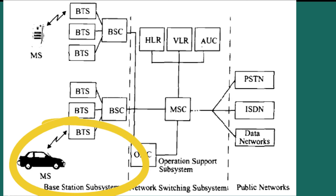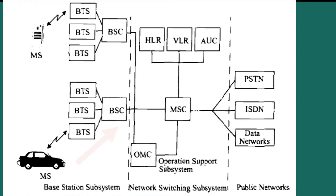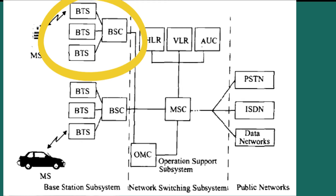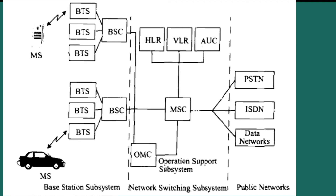The block diagram of the GSM system architecture shows the mobile station communicating with the base station subsystem (BSS) over the radio air interface. The BSS consists of many BSCs which connect to a single MSC, and each BSC typically controls up to several hundred BTSs. The NSS handles the switching of GSM calls between the external network and the BSCs, and is also responsible for managing and providing external access to several customer databases. The MSC is the central unit in the NSS and controls the traffic among all the BSCs.